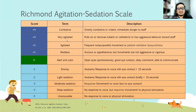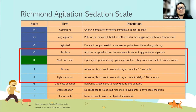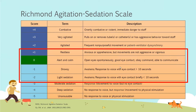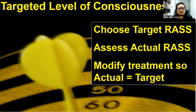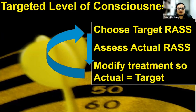Based on published evidence, we aim for a RASS target of minus two to plus one for most patients, with the ideal range being zero to minus one. In practice, we implement a targeted level of consciousness cycle: choose the target RASS, assess the actual RASS, modify treatment so actual equals target, then repeat every shift — every eight hours.